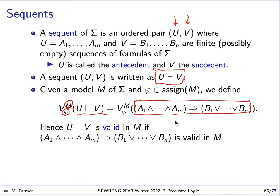And for that reason, we will say that a sequent is valid precisely if this formula is valid. Or in other words, it's valid in a model if this formula is valid in a model.